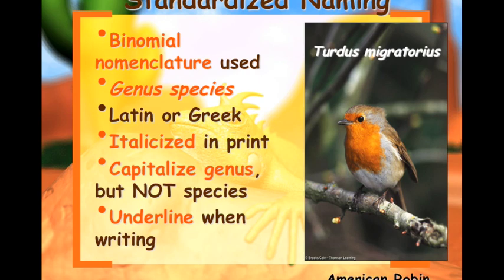Here we have an American robin. The scientific name is Turdus migratorius. So Turdus would be the genus — notice it's capitalized. Migratorius is the species — it's not capitalized. So Turdus migratorius for the American robin.